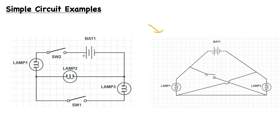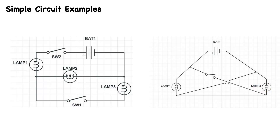Now for the example on the right, we have something a bit different. With the switch left open, current leaves from the positive terminal, travels through the circuit, and does not travel through the switch because it is open. It continues on to power lamp one. But there is a wire that is shorting the other lamp. Even though it may look like current can flow undisrupted to lamp two, this shorting wire prevents that. So the current flows across lamp one, travels across the shorting wire, and returns to the negative terminal — due to both the shorting wire and the position of the switch.